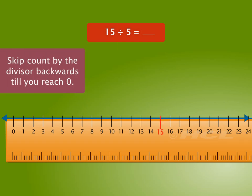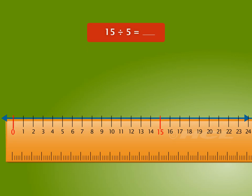Now, we start skip counting by the divisor backwards till we reach 0. In this problem, the divisor is 5. So, we skip count by 5 backwards.